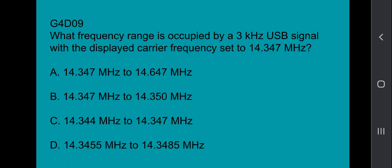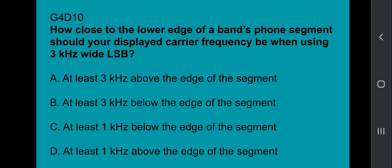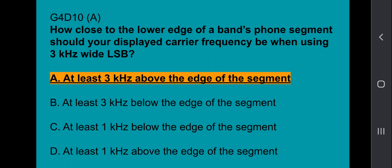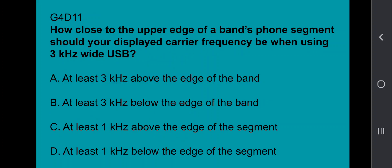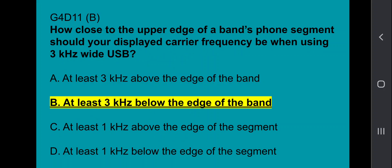G4D09, what frequency range is occupied by a 3 kilohertz upper sideband signal when the displayed carrier is set to 14.347 megahertz? This answer's going to be 14.347 megahertz to 14.350 megahertz. G4D10, how close to the lower edge of a band's phone segment should your displayed carrier frequency be when using 3 kilohertz wide lower sideband? At least 3 kilohertz above the edge of the band. G4D11, how close to the upper edge of the band's phone segment should your displayed carrier frequency be when using 3 kilohertz wide upper sideband? And here you're going to go at least 3 kilohertz below the edge of the band.